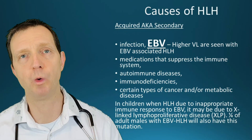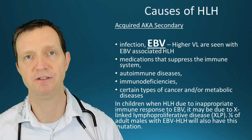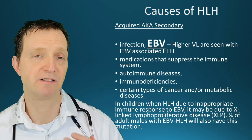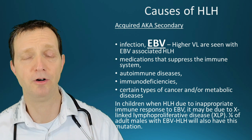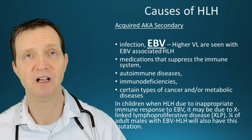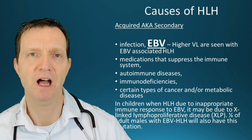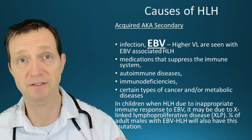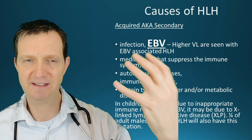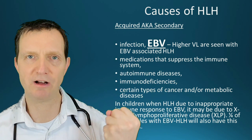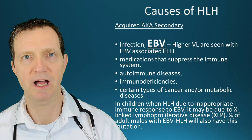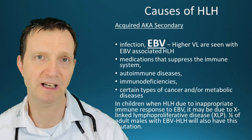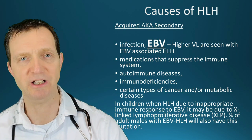The secondary causes are what's called acquired. For the vast majority of cases it is EBV — Epstein-Barr virus — the same virus that gives you glandular fever and is a form of human herpes virus type 4. Someone gets infected and the mechanism for trying to slow down EBV doesn't quite work, so higher viral loads of EBV are generally seen in acquired or secondary HLH.